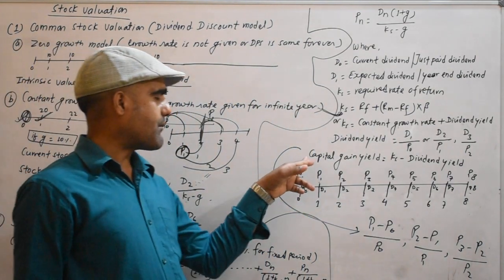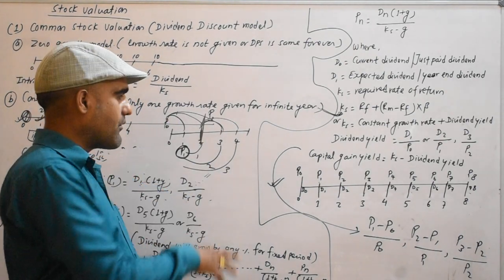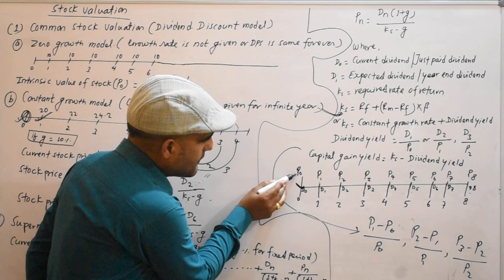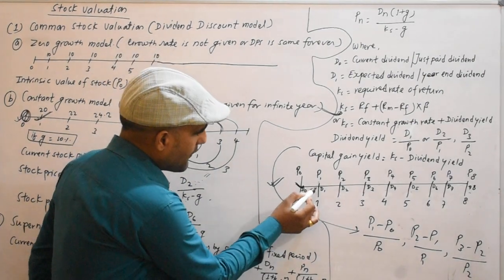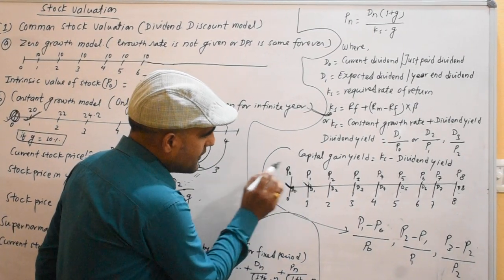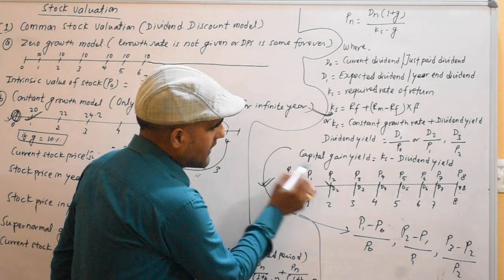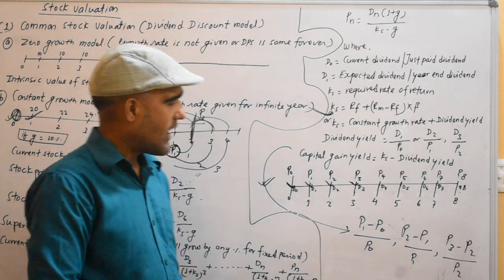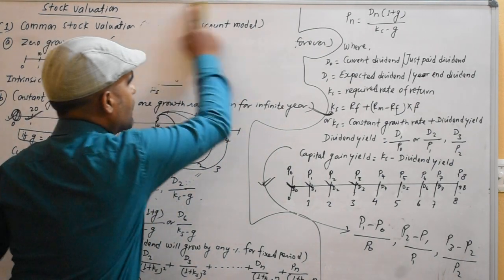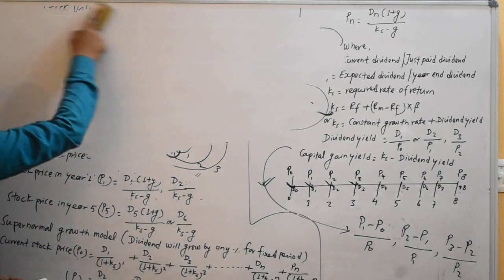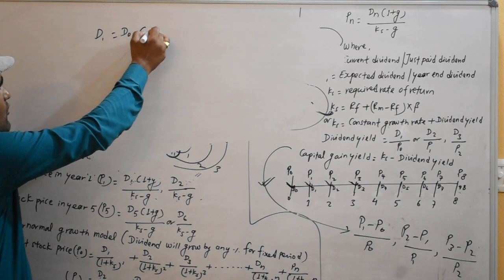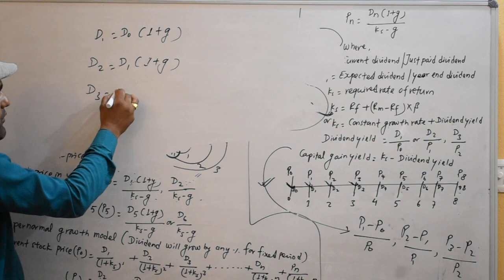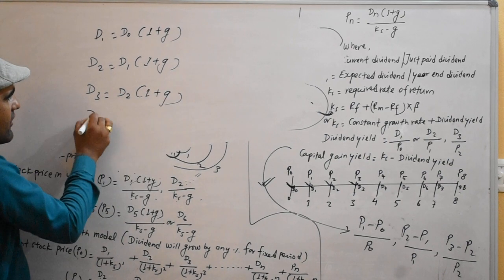Now we have a total value. The price P0 is the current value. The dividend yield is D0. In one year, the stock is P1 and the dividend is D1. In two years, the stock is P2 and the dividend is D2. In three years, the stock is P3 and the dividend is D3. D2 equals D1 times (1 plus g), D3 equals D2 times (1 plus g), D4 equals D3 times (1 plus g). The constant growth rate means D0 times (1 plus g) gives us the next dividend.